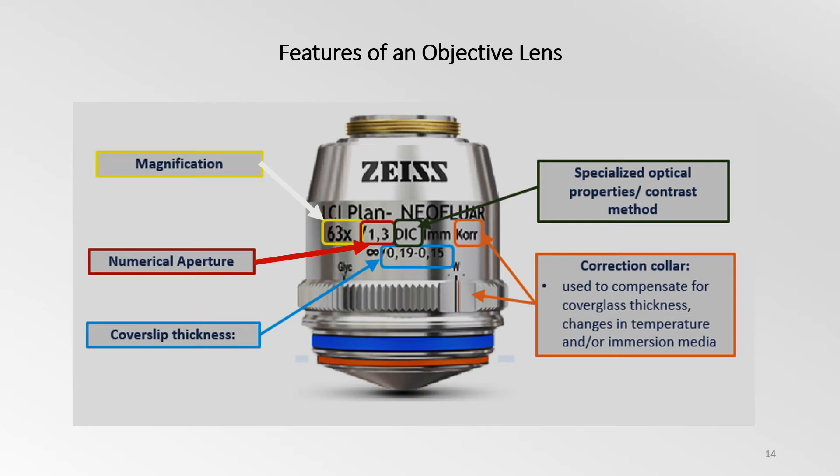Most objectives are designed to image specimens that are covered by a cover glass or coverslip. The value inscribed on an objective indicates the thickness of these coverslips. Since there may often be small variations in thicknesses within a batch of coverslips, some objectives have a correction collar that adjusts the placement of the objective's internal lens elements in order to compensate for these variations. Some of these collar adjustments can also correct for changes in temperature or immersion media. Additional contrast enhancing properties of the objective are also inscribed on the objective barrel.